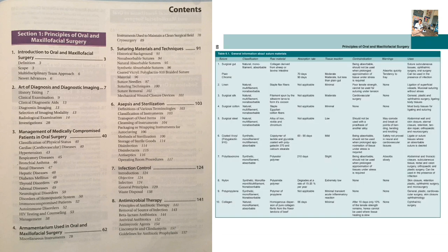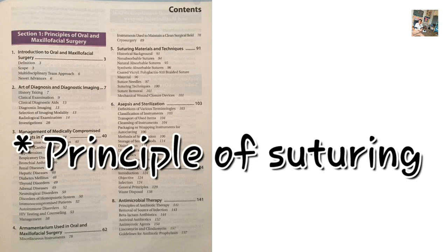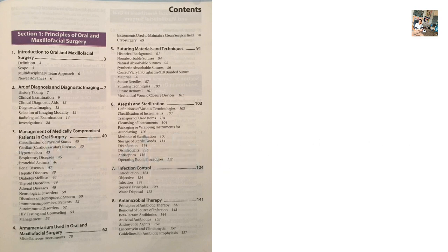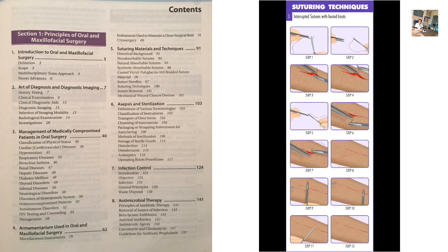In suture material and techniques, we have the classification of sutures, then suture needles — eyed, eyeless, curved, radius, sharp. Then the principles of suturing, types of sutures. Important for exams as well as viva: suture techniques — horizontal sutures, mattress sutures, vertical sutures, and figure-of-eight sutures.